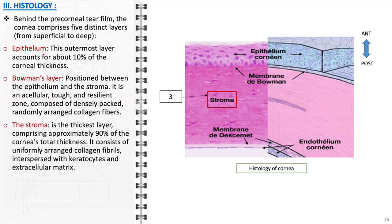The stroma is the cornea's thickest layer, making up about 90% of its total thickness. It is composed of parallel collagen fibrils, keratocytes, and an extracellular matrix. The precise arrangement of the collagen fibrils is crucial for maintaining corneal transparency.